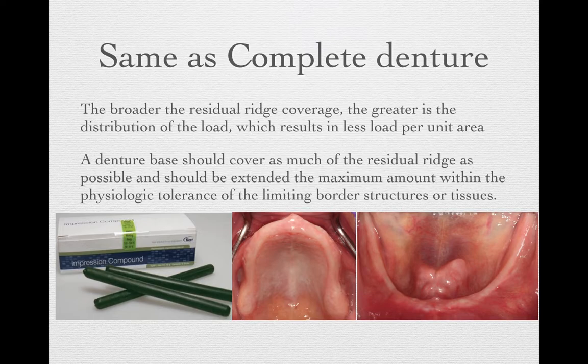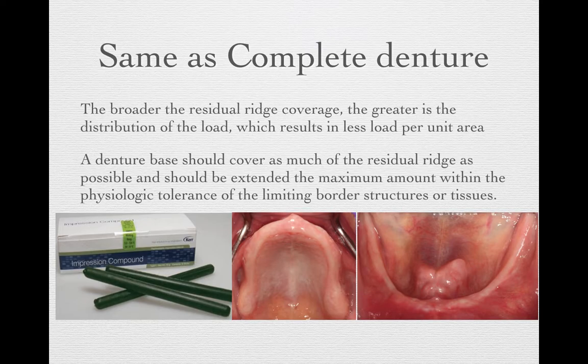The denture base should cover as much of the residual ridge as possible and be extended to the maximum within the physiological tolerance of the limiting border structures. When we do a border mold, we use green compound and a hot water bath. If you are interested in how to do this in the patient's mouth, you can refer to Virtual Plus, which has a video showing how to do border molding on complete dentures — the same technique applies to partial dentures.